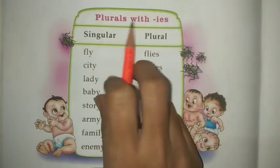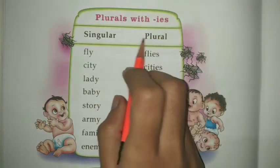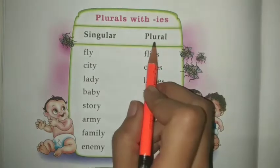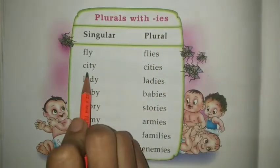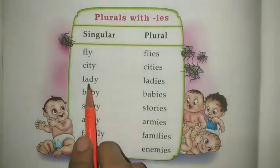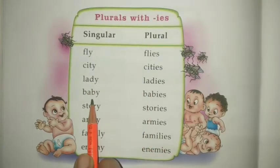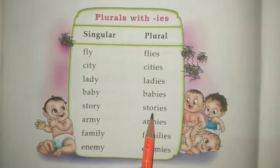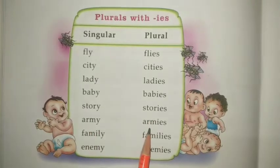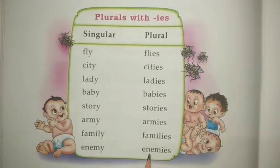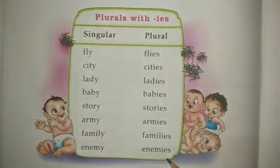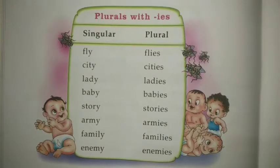Plural with IES. When a word ends in Y (preceded by a consonant), change Y to IES: fly → flies, city → cities, lady → ladies, baby → babies, story → stories, army → armies, family → families, and enemy → enemies. Plural के साथ IES होता है.